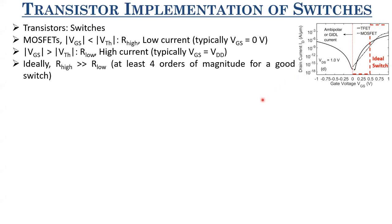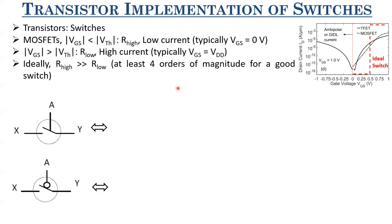That was a brief overview of tunnel FETs and current research. Now let us talk about implementation of positive and negative switches using MOSFETs. NMOS can implement the positive switch. To recap: for a positive switch, input = 0 means X and Y are disconnected (high resistance); input = logic one (high voltage) means X and Y are connected by low resistance. For a negative switch: A = 0 connects X and Y with low resistance; A = 1 disconnects them.